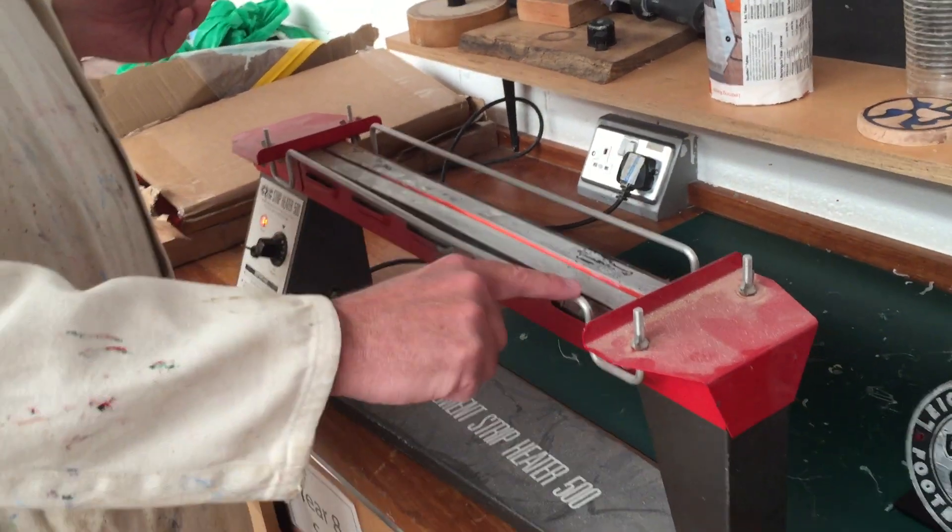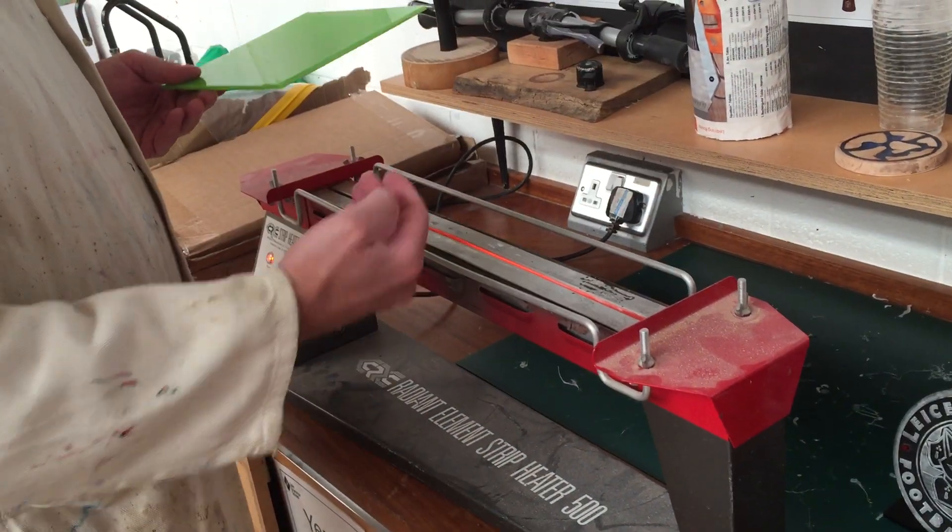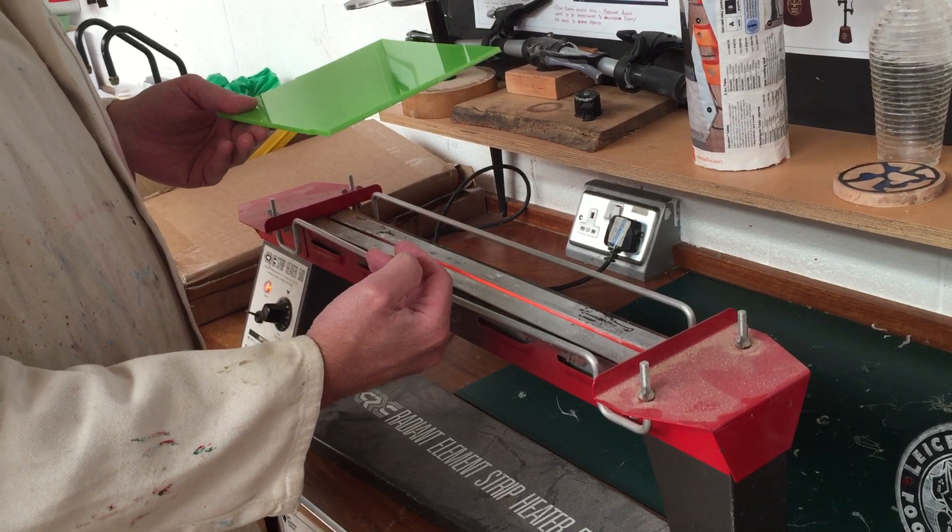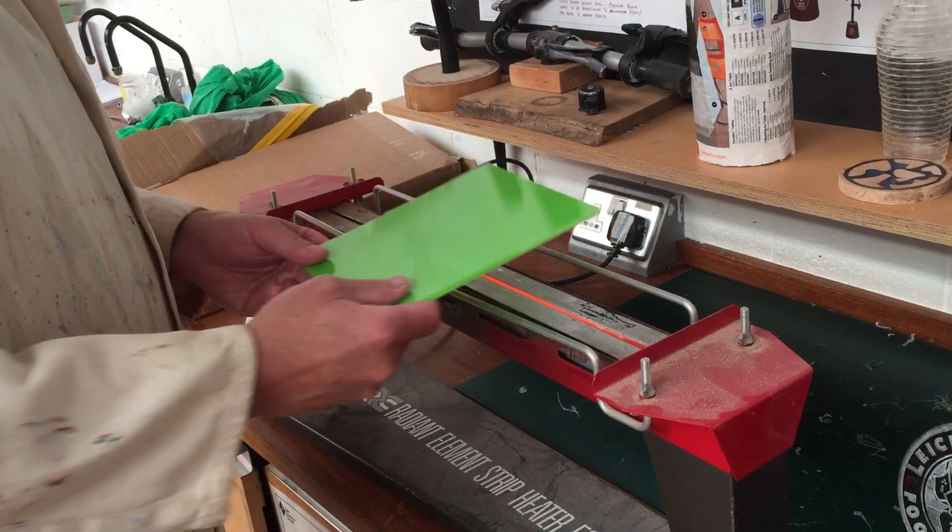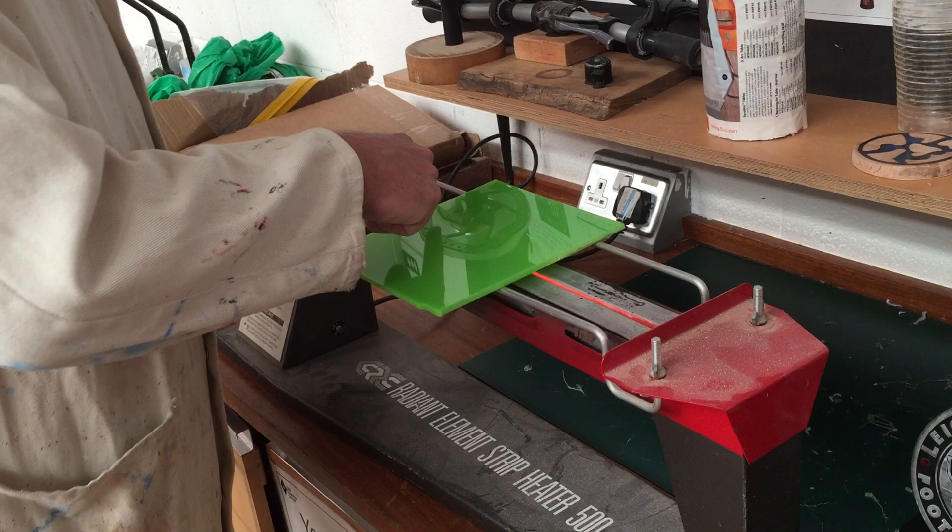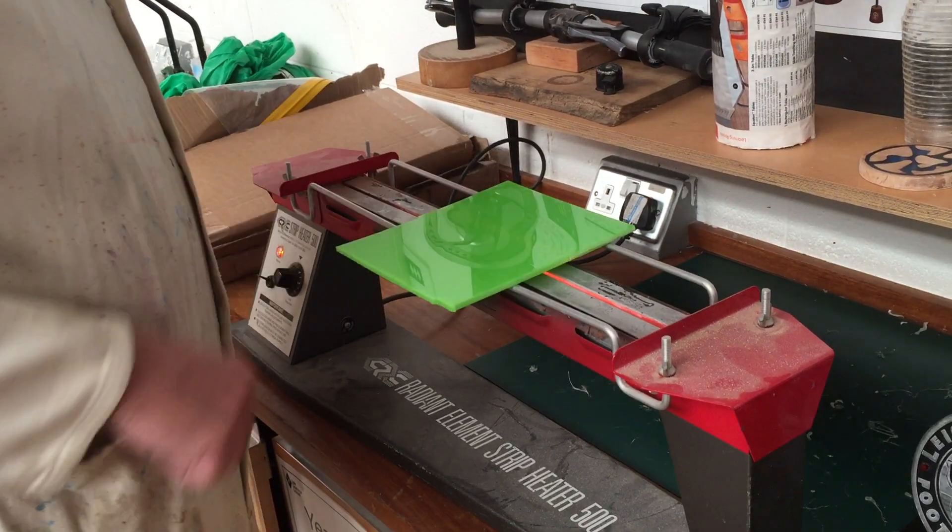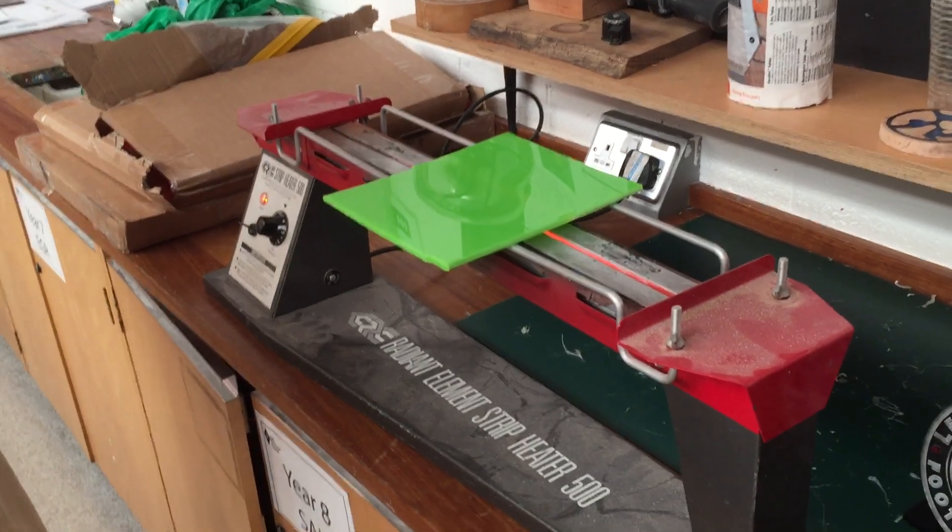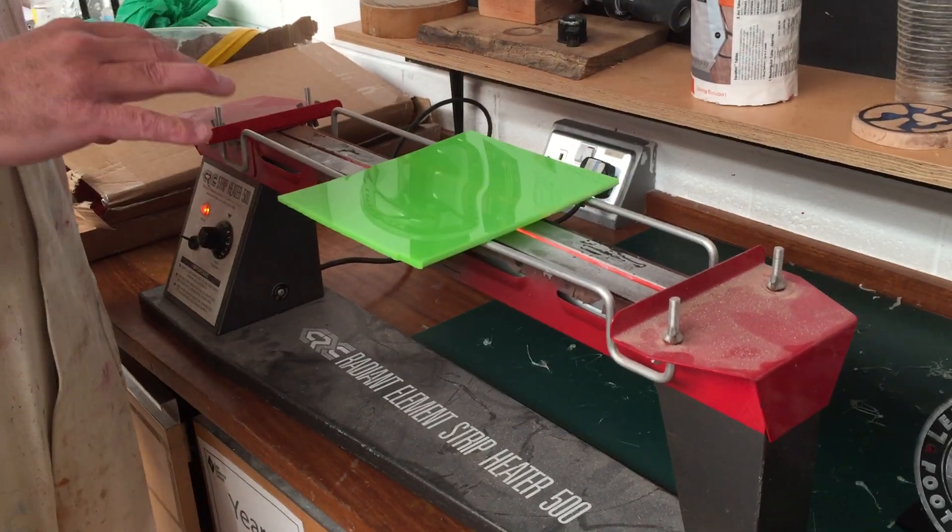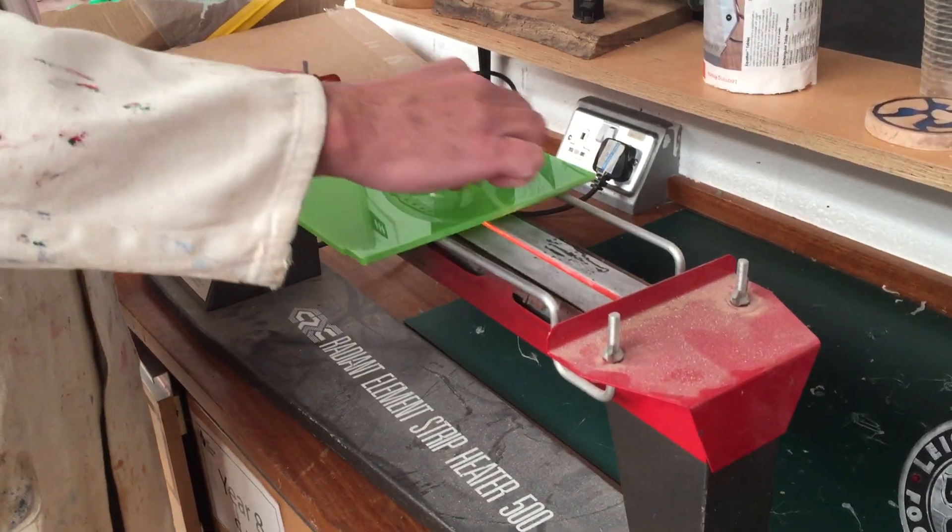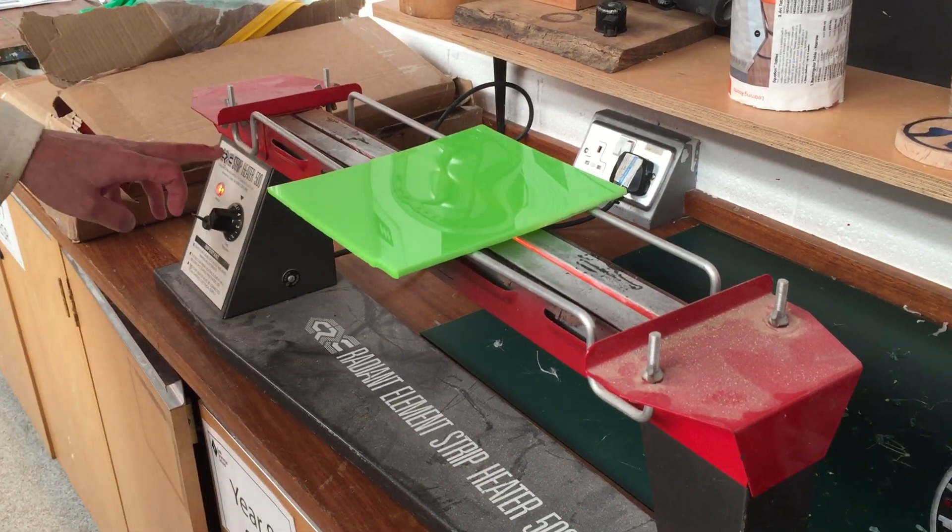So there are some guide rails here and at the back, and they give me an indication of how close I can get before I burn myself. Now I can place the acrylic over and it will heat in this area directly above the element. It will heat locally and won't get hot all over the sheet, just in that strip. So that's where we get the name strip heater.